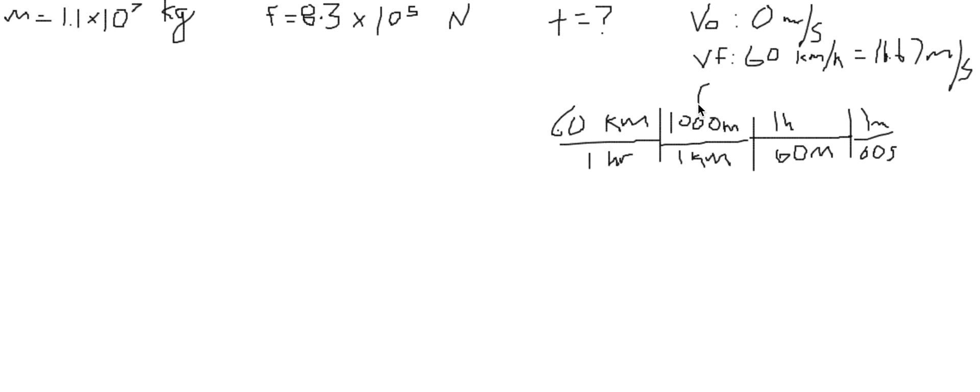So we need to find our acceleration now. And how can we do that? We can take the equation force is equal to mass times acceleration and take the force divided by the mass, which will give us our acceleration. So 8.3 times 10 to the 5 divided by 1.1 times 10 to the 7, and that's going to give us a value of 0.075 meters per second squared.